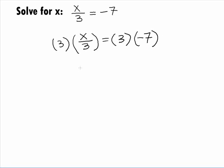When we multiply the 3 times the left side, the 3's cancel out and we're left with x and when we take 3 times negative 7, we have negative 21 on the right side.